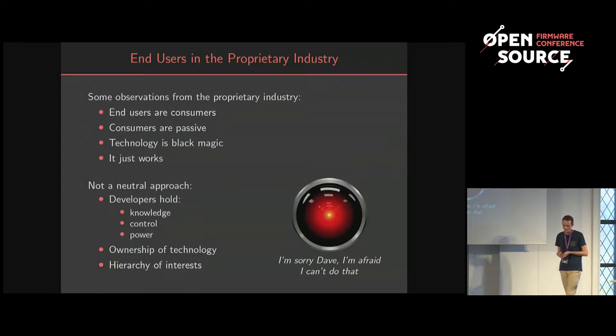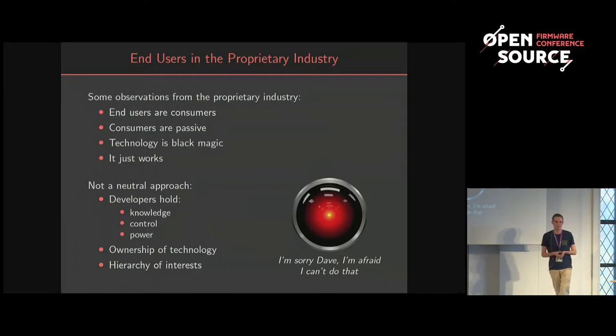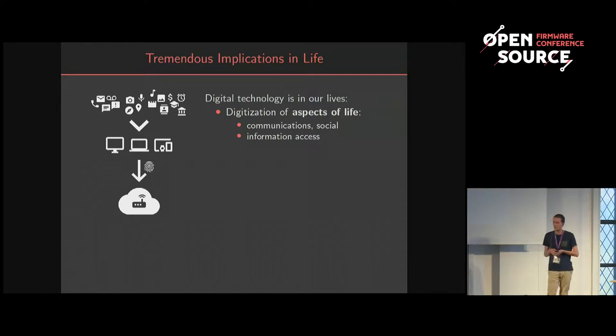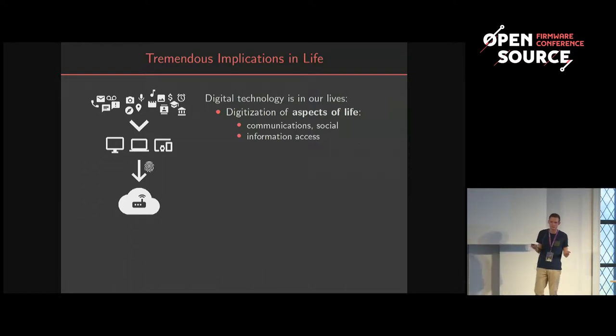That's like 2001: A Space Odyssey where the machine says, 'I'm sorry, I can't do that.' Digital technology is now everywhere in our lives — in our communications, social interactions, and all the information we access. Our devices have very extensive input and output, so there's a lot of data collection. They know where we are, what we do, who we talk to, and basically everything about us. What data do we send, to whom, under what conditions, and for what purpose?